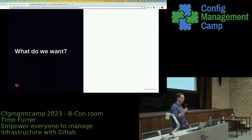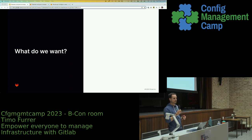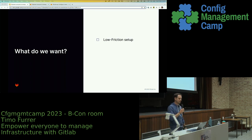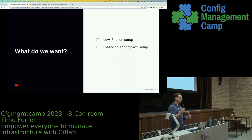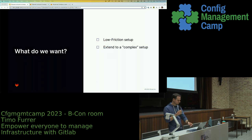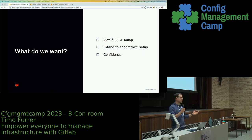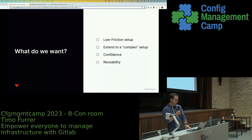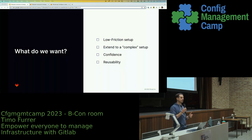In the next half hour I want to show you how we can do all these things fairly easily using GitLab and Terraform. Concretely, we want a low-friction setup — it should be easy to bootstrap a new Terraform project. We should also be able to extend a simple setup into something more complex, like multiple environments. We want confidence — if I propose an infrastructure change, I want to be sure what it's going to look like before deploying to production. And we want to easily reuse our Terraform modules.